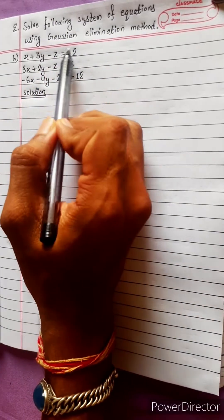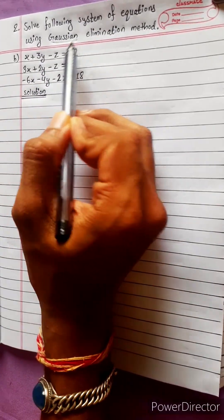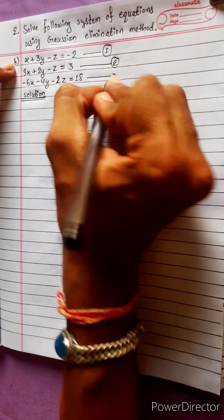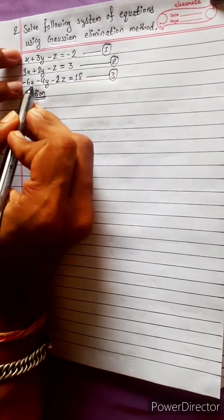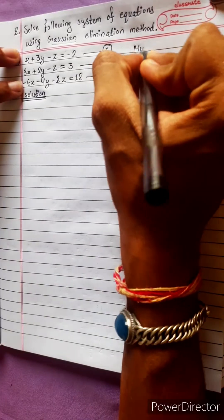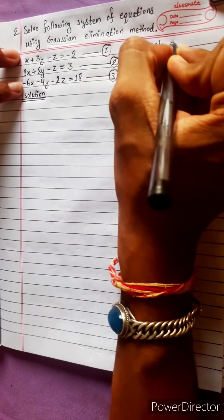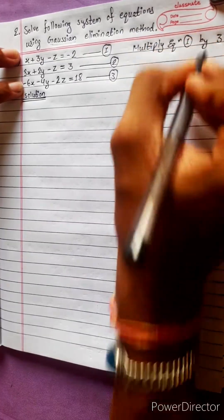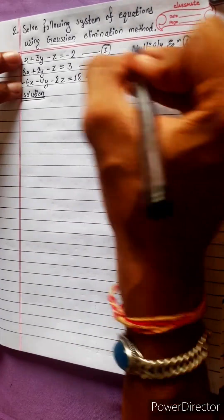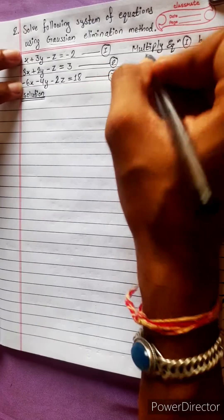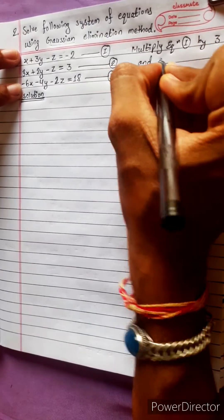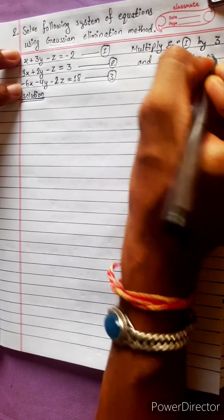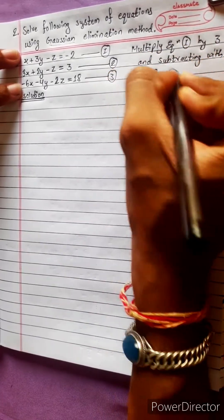Solve the following system of equations using Gaussian elimination. Equation 1, equation 2, equation 3. Solving by multiplying equation 1 by 3 and subtracting with equation 2.